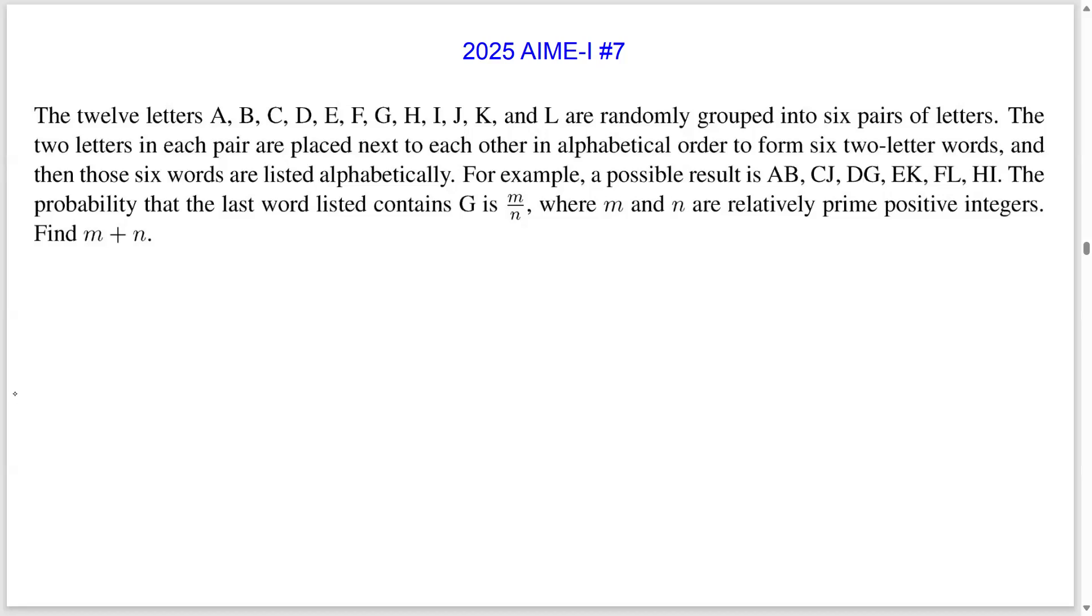Okay, so to start this problem, let's first find the number of ways that we can pair off the 12 letters. And it turns out this is actually a pretty well-known counting problem that you should be familiar with. So the number of ways to pair off 2N objects into N pairs is given by this handy formula.